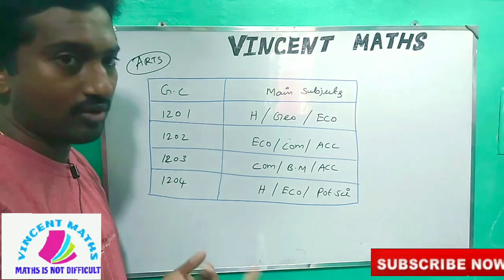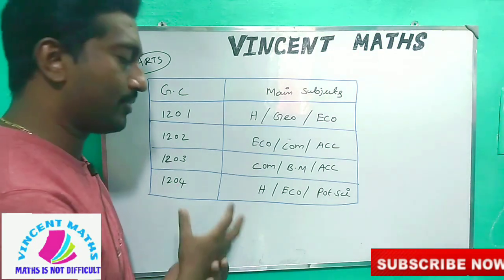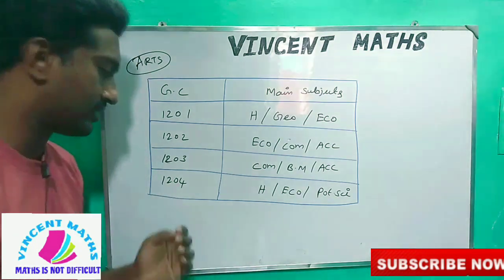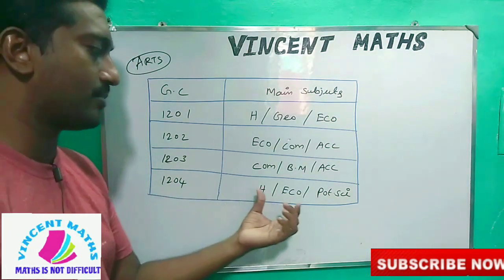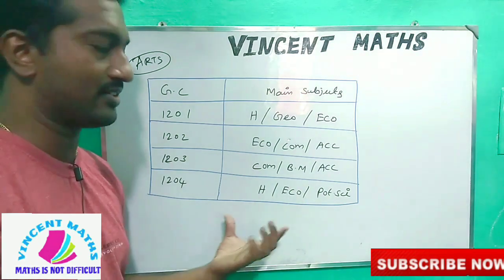That's a big choice. For example, history, economics, and political science — these are the subject combinations available. If you choose this combination, you can choose your path.